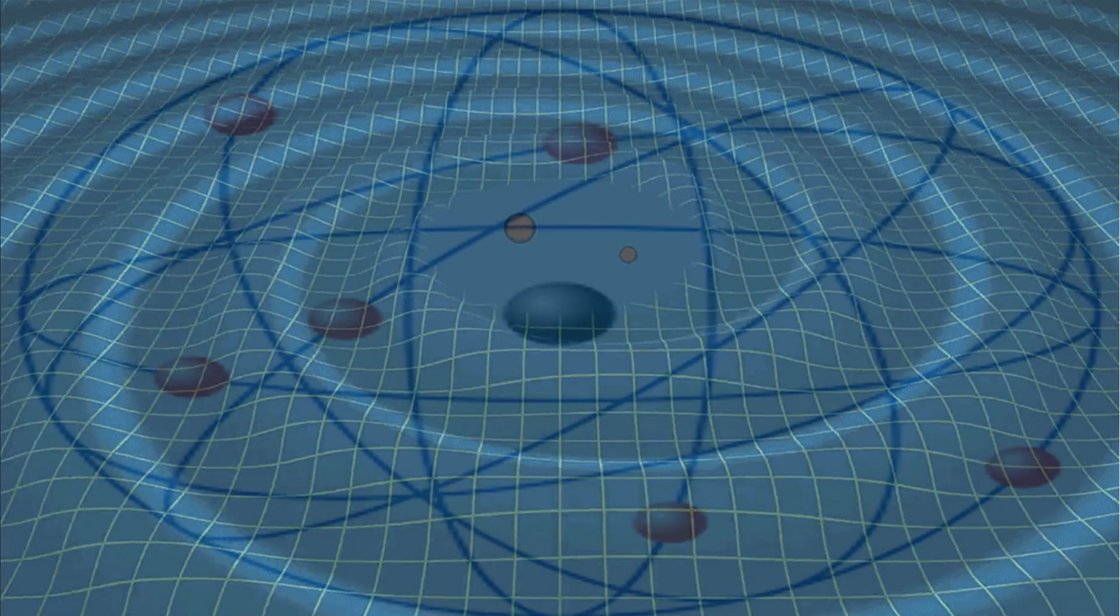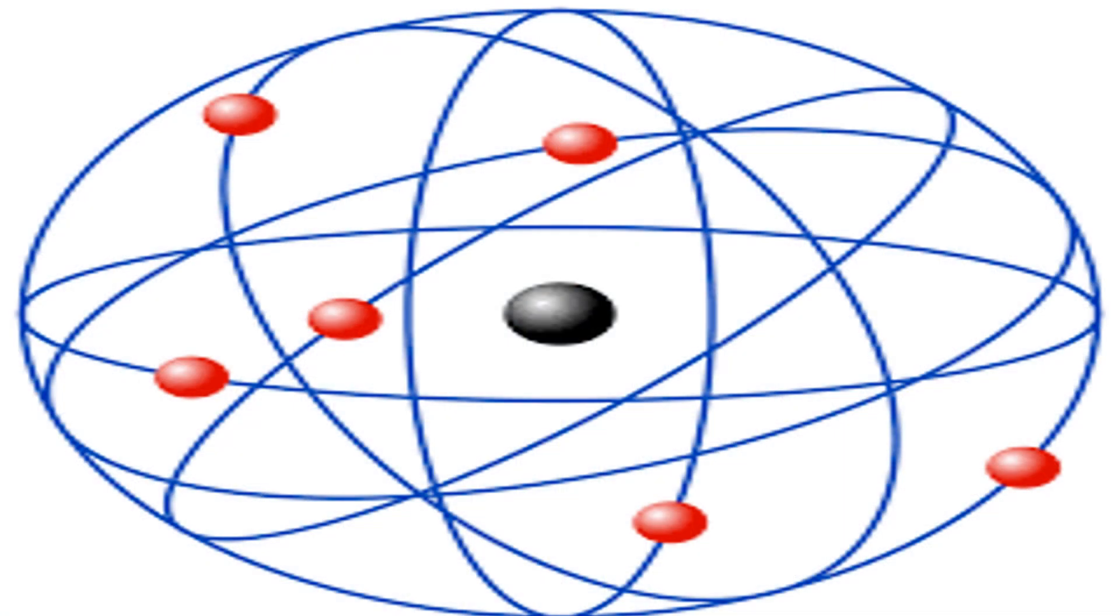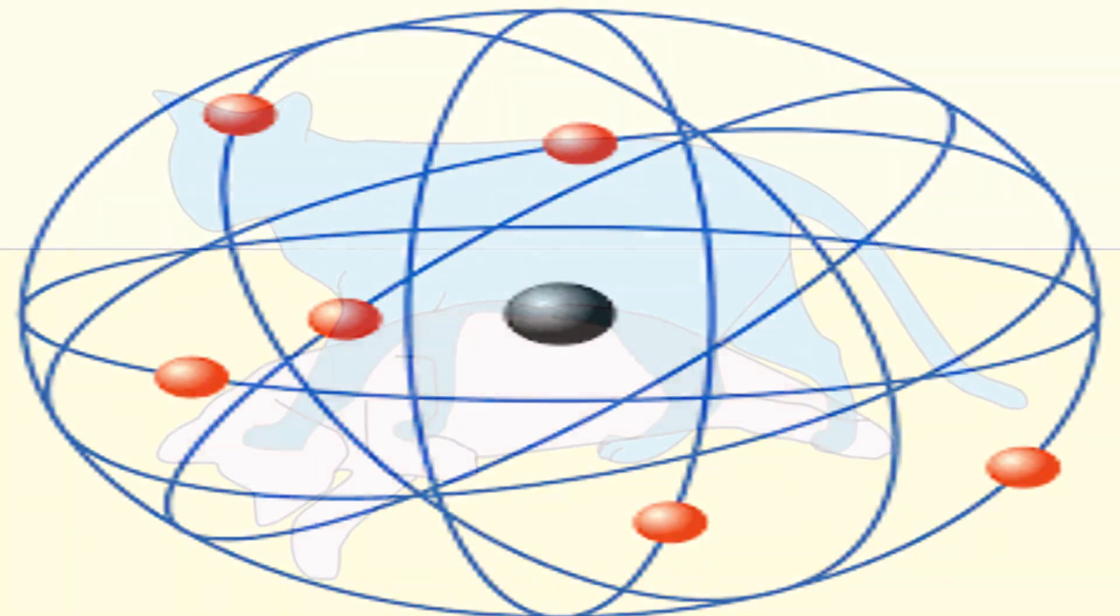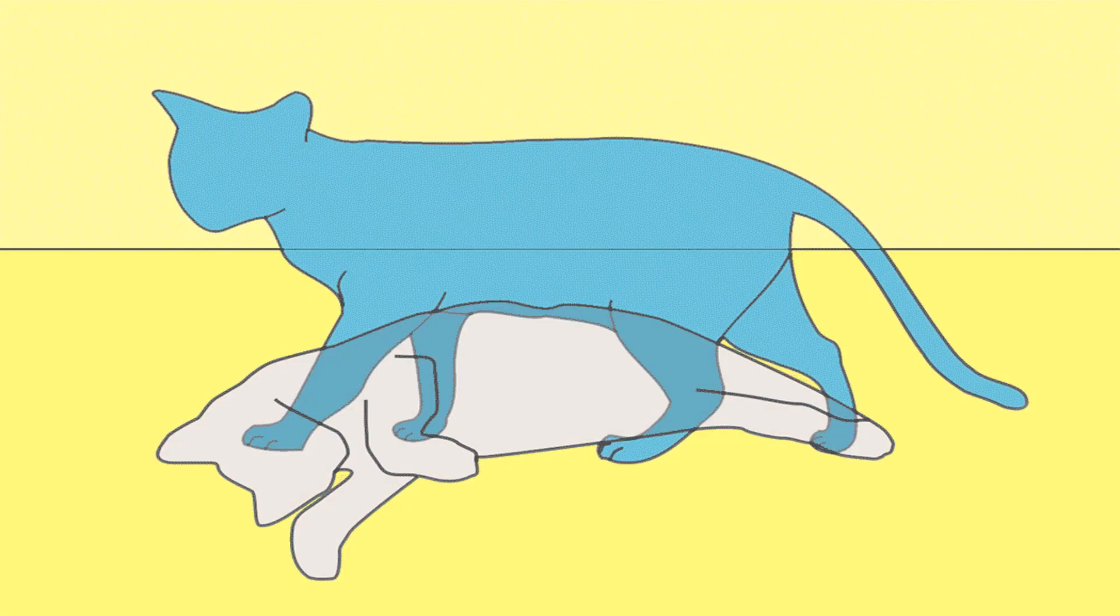With the Rutherford model, explaining and understanding the atom and the cosmos becomes very easy, and all those paradoxes in quantum mechanics and relativity cease to exist.